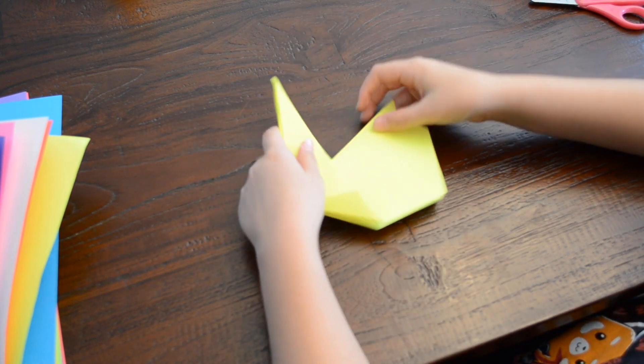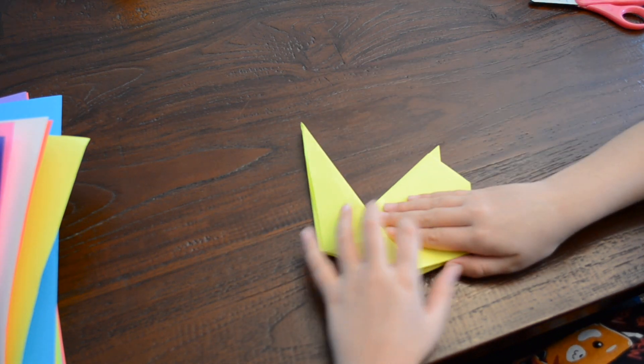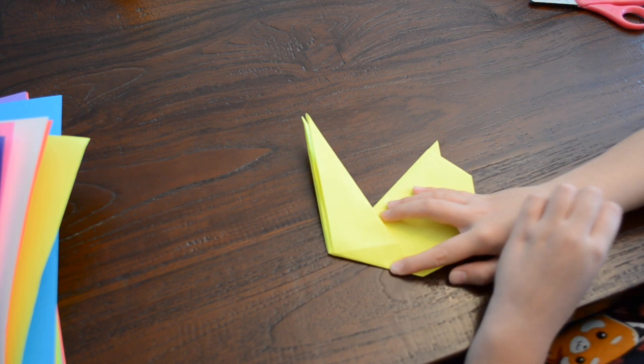To pull the rabbit ears out, you just have to pull it up. Sorry, I forgot to mention that. And you have to crease it down.